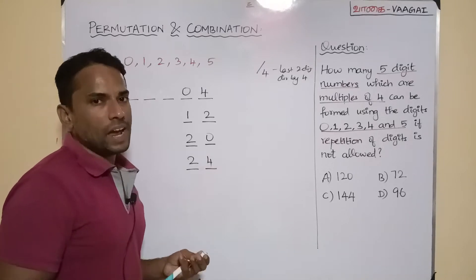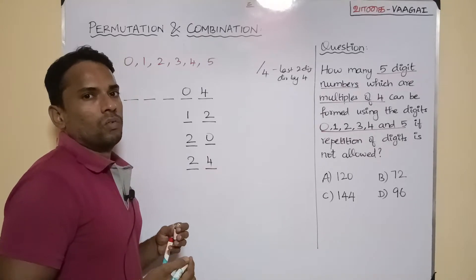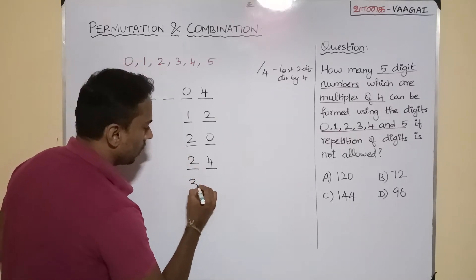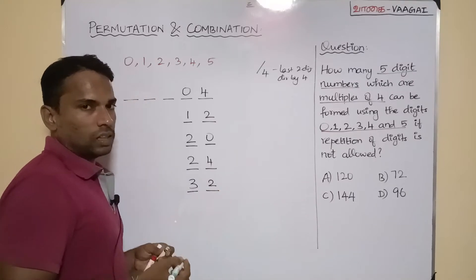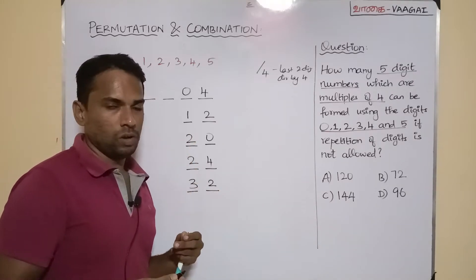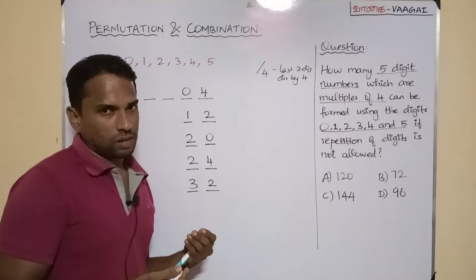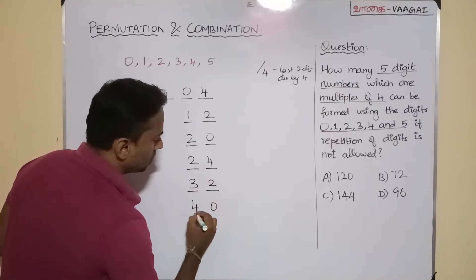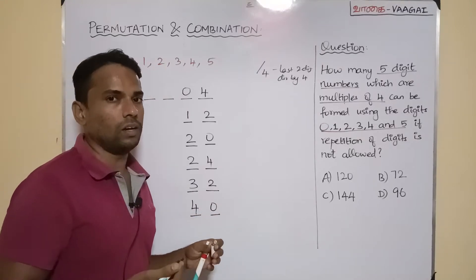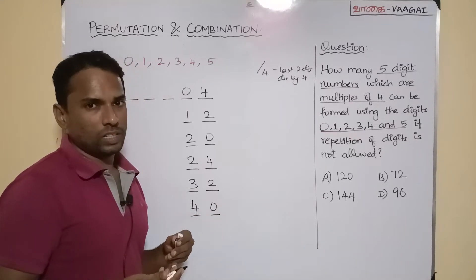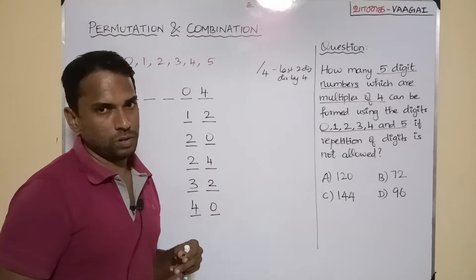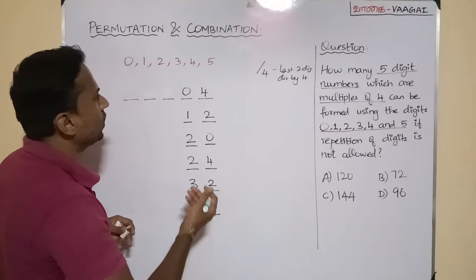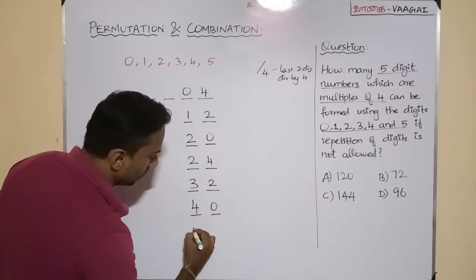4×7=28: 8 is not available. 4×8=32: both 3 and 2 are available, so 32 is possible. 4×9=36: 6 is not available. 4×10=40: we can have 4 and 0, so 40 is possible. 4×11=44: we cannot repeat digits. 4×12=48: 8 is not available. 4×13=52: both 5 and 2 are available, so 52 is possible.